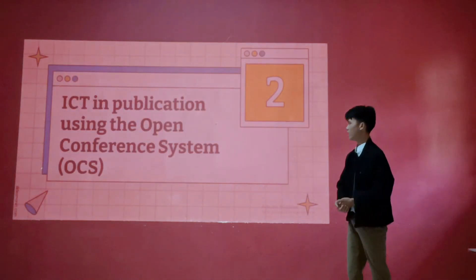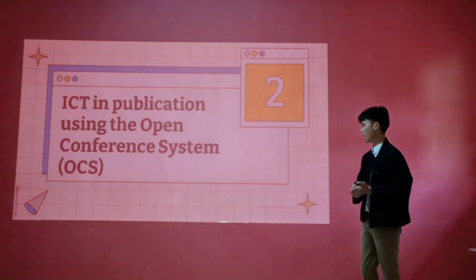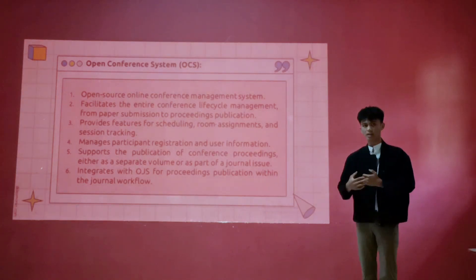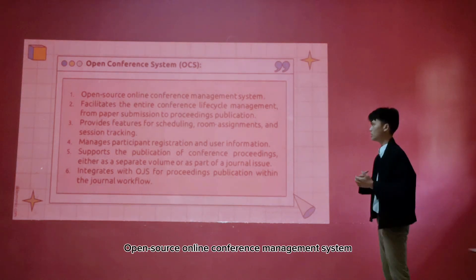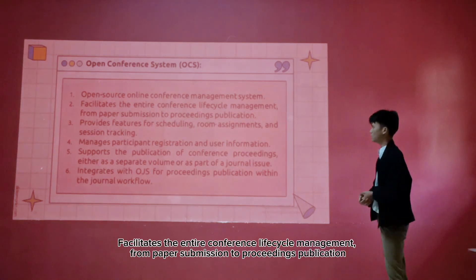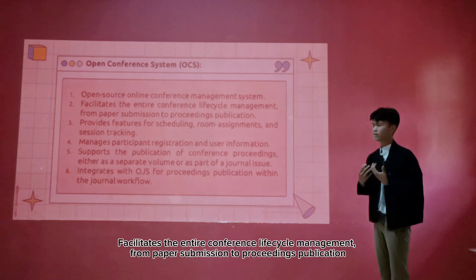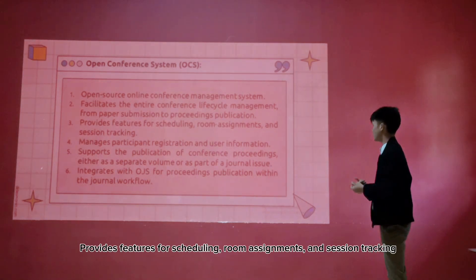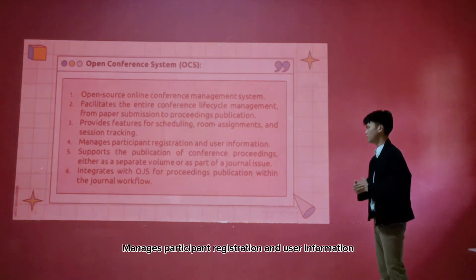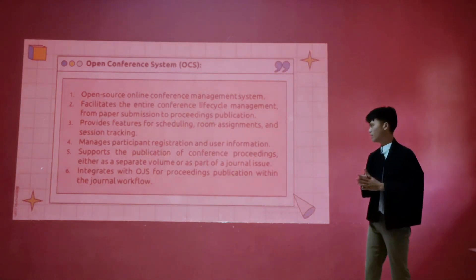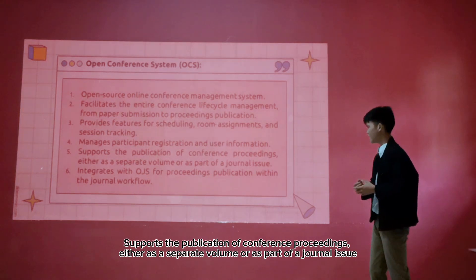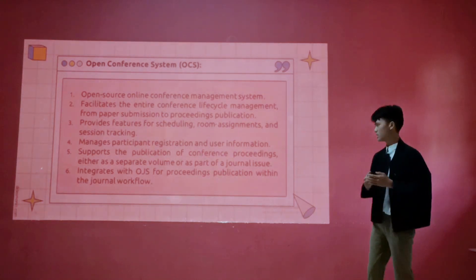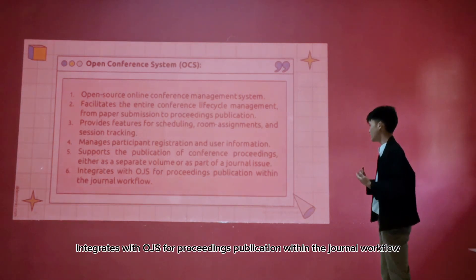The next one is ICT publication using the Open Conference System, which we call OCS. In the Open Conference System, there are six points. First, open source online conference management system. Second, facilitates the entire conference management from paper submission to proceedings publication. Third, provides features for scheduling, reviewing, and session tracking. Fourth, manages participant registration and user information. Fifth, supports the publication of conference proceedings either as a standalone volume or as part of journal issues. And the sixth, the last one, is that it is integrated with OJS for seamless communication within the journal workflow.